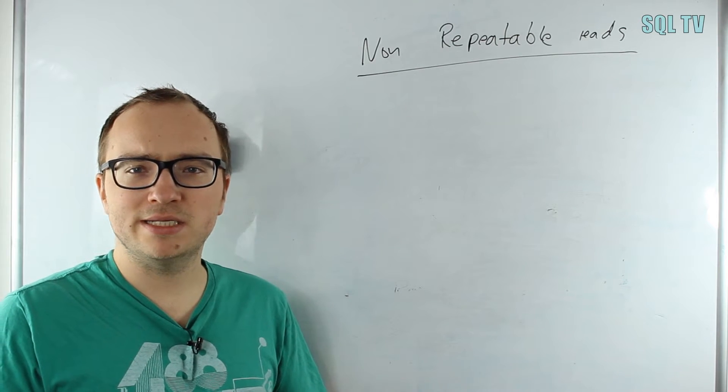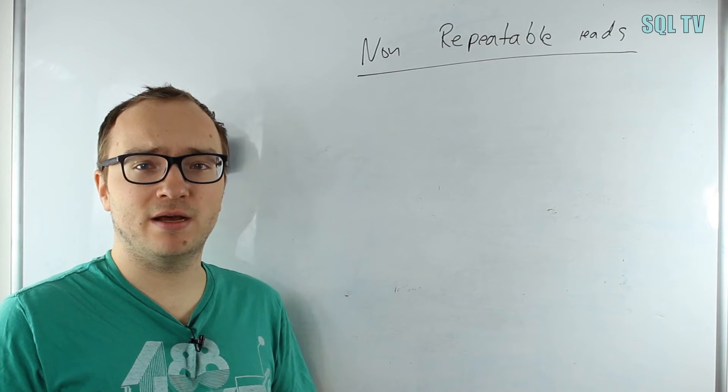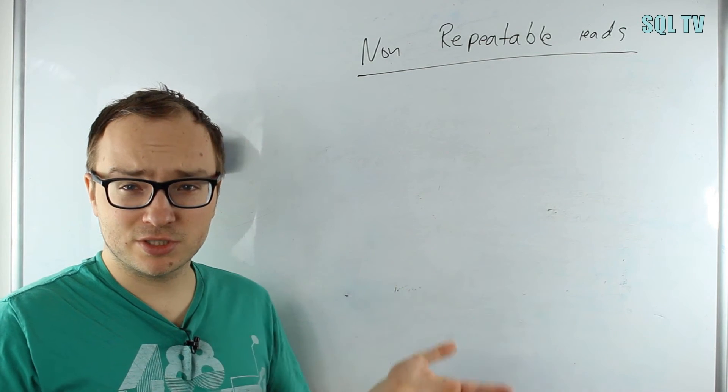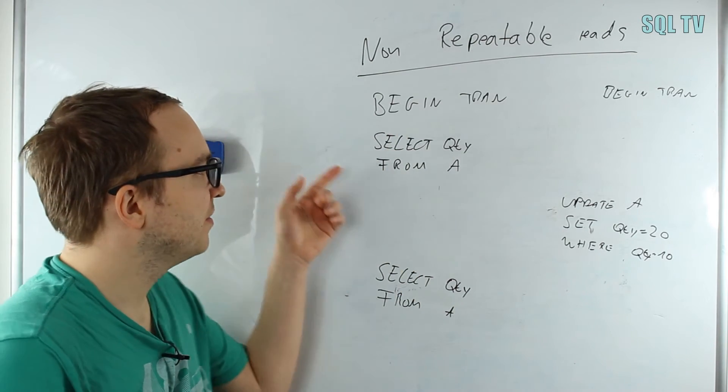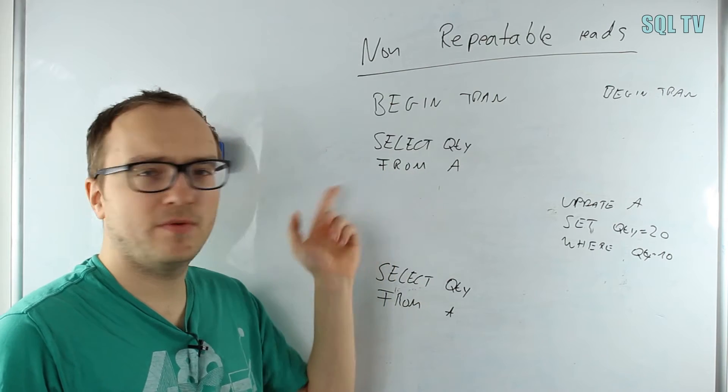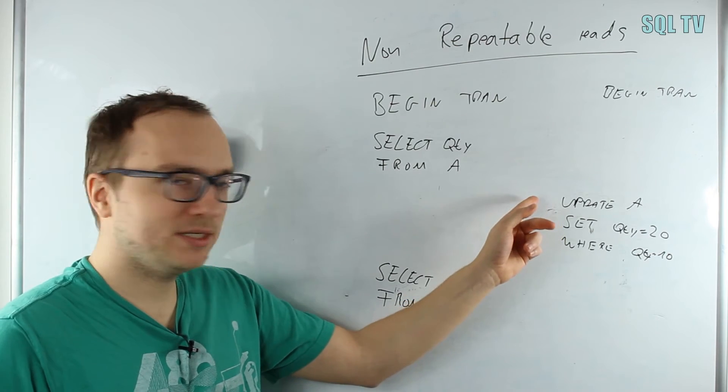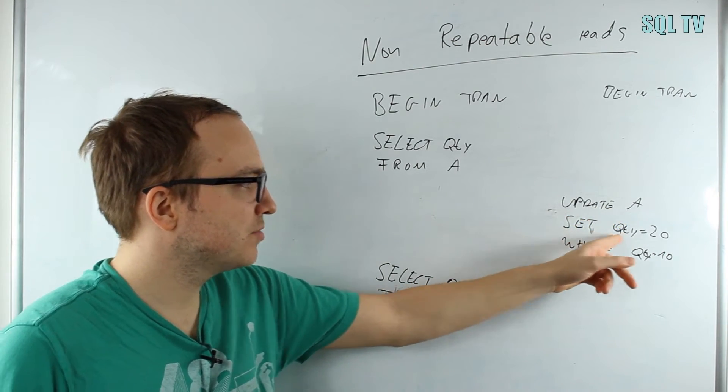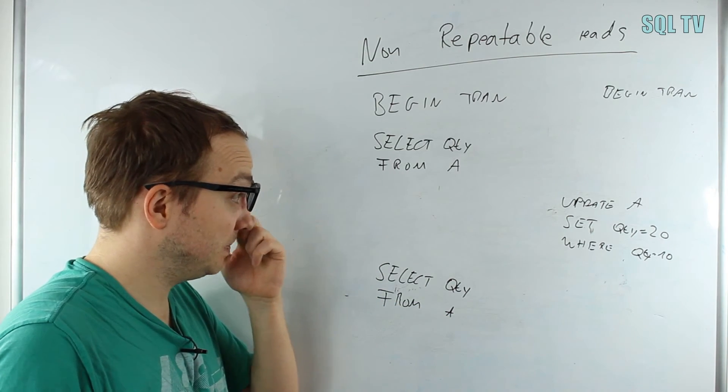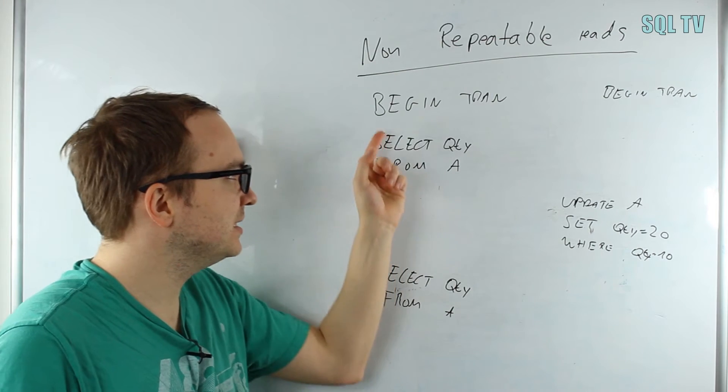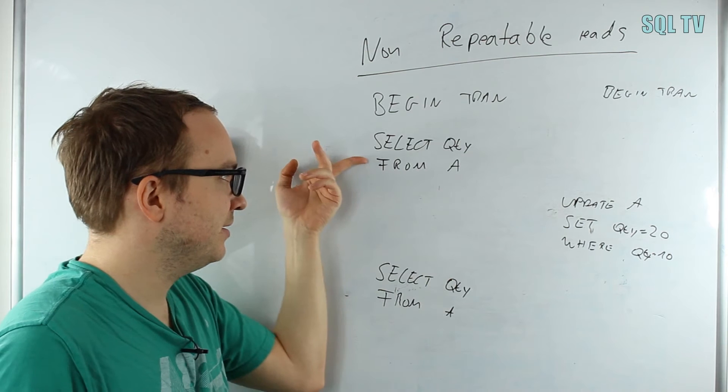Next one is called non-repeatable reads. It means a transaction reads data with a certain query at least twice in the same transaction and receives different data for it. We have two transactions: the first one is selecting all quantities from A and does this twice. In between, the second transaction updates A, sets quantity to 20 where quantity equals 10. What will happen is, if we have a quantity 10 before this, we will select somewhere a row with quantity 10.